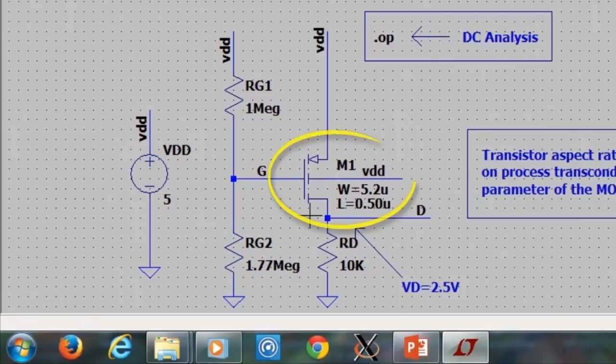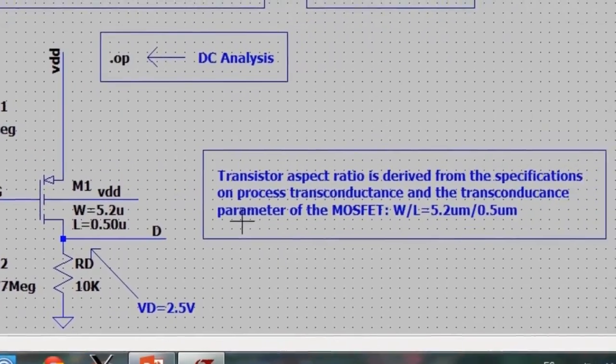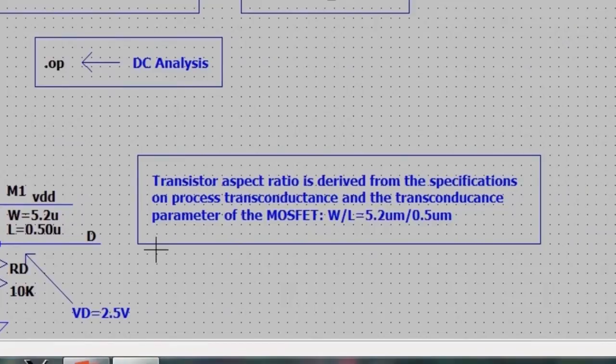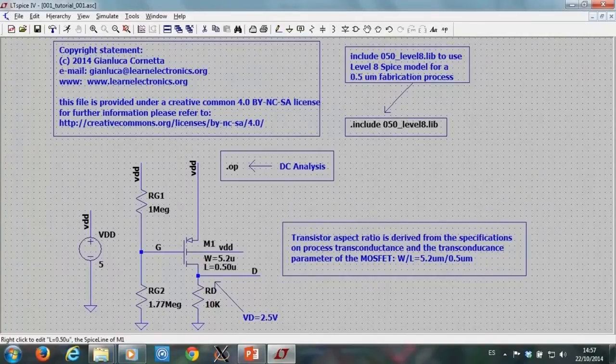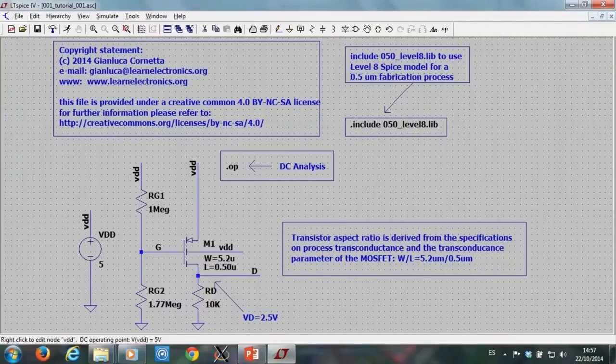The transistor M1 aspect ratio may be deduced from the process transconductance and the transconductance parameters, and is 5.2 divided by 0.5 microns. The channel width is 5.2 microns and channel length is 0.5 microns. That is the minimum channel length allowed by this technology.